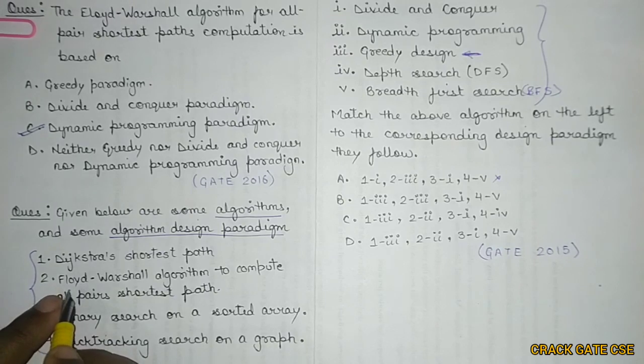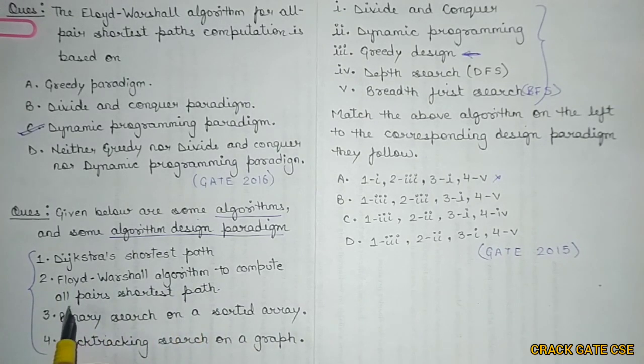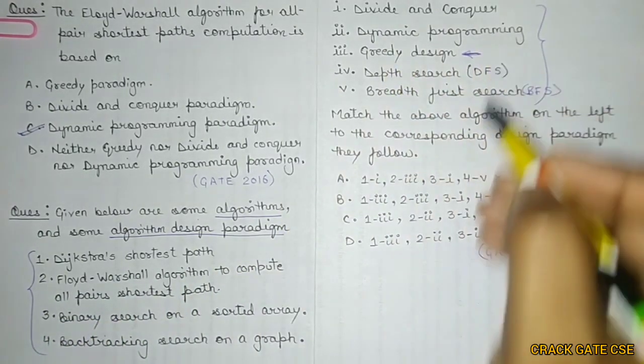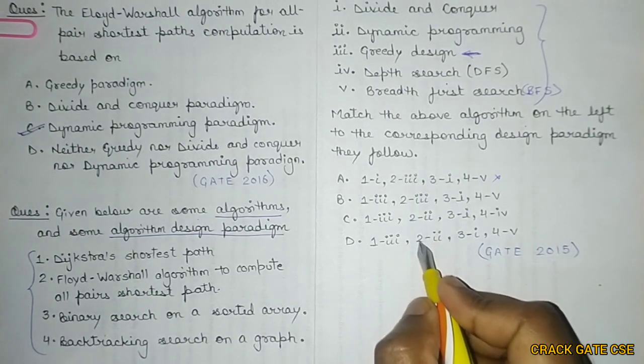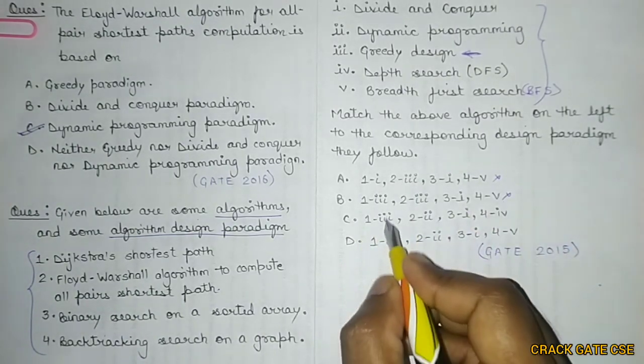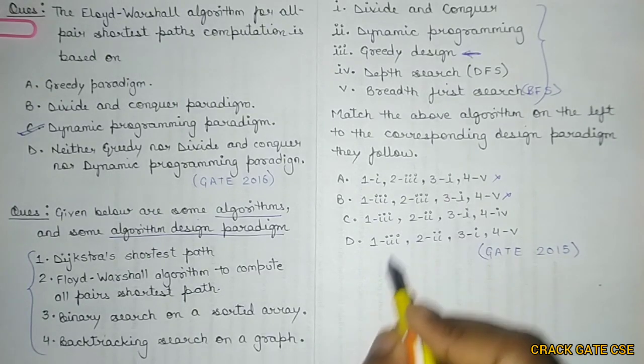Similarly, go with the second one: Floyd-Warshall algorithm to compute all-pair shortest path. I already know that Floyd-Warshall algorithm is dynamic programming. Now check for the second one: second one is dynamic programming in these two options. That means second to second. This is also wrong, so only two options are available now.